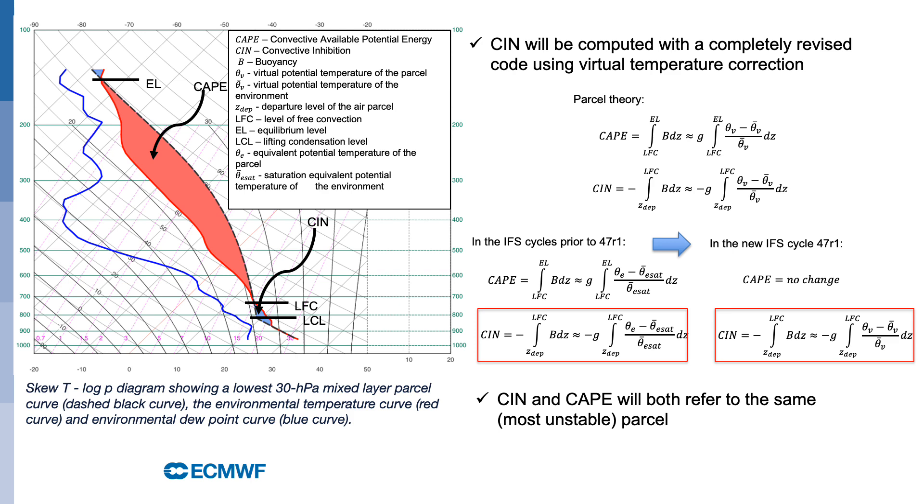convective inhibition in the new model cycle is using virtual potential temperatures of the parcel and the environment. This provides an estimate for CIN which is much more in line with forecast practice.